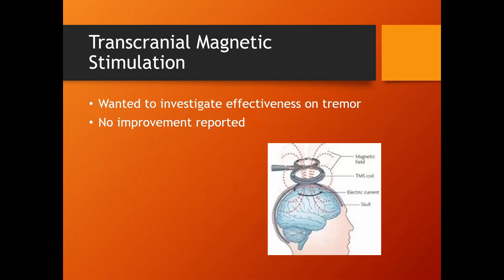And then the last intervention I'm going to talk to you about is the transcranial magnetic stimulation. This was done over a consecutive four-day period looking to see with this type of intervention if there was any effect on tremor. Basically what they found is that there was no improvement reported, so not considered effective in nature. What I also want to note is that for all of the interventions that were done, the individuals that participated never discontinued any medication. So they were taking their medications throughout the study period.